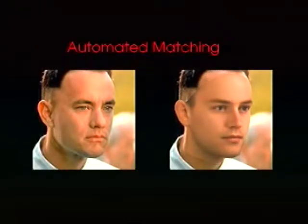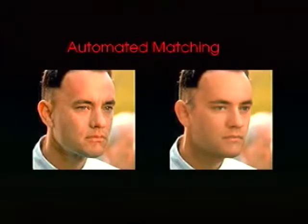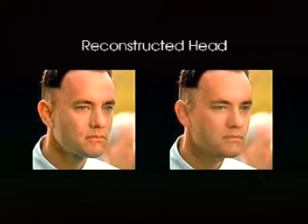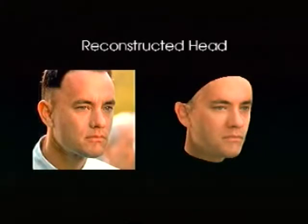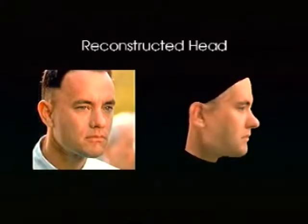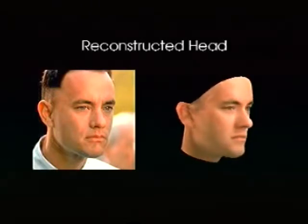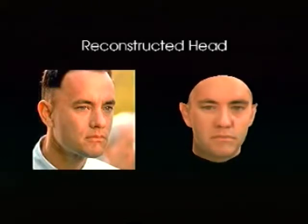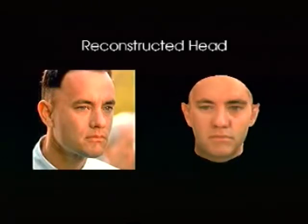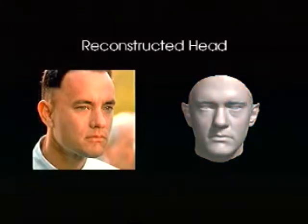3D shape and texture are optimized along with parameters such as size, orientation, and color contrast. The output is a high resolution 3D mesh of the face — an estimate of 3D shape and surface colors based on a single image.